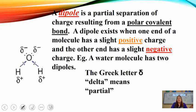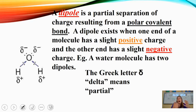In a polar covalent bond you end up with a partial negative charge and partial positive charges, which comes in handy when looking at solubility. When electrons are shared unequally, that's called a polar covalent bond. Hydrogen has a low electronegativity, so when bound with oxygen, the shared electrons spend more of their time with oxygen than with hydrogen. This creates what's called a dipole — a partial separation of charge.